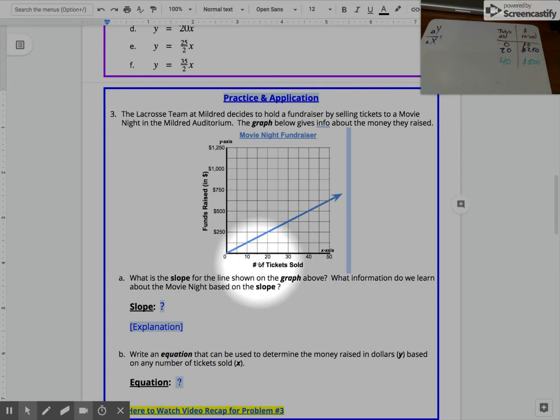This blue line provides our information. Part A says: what is the slope for the line shown on the graph above, and then also what information do we learn about the movie night based on this slope?